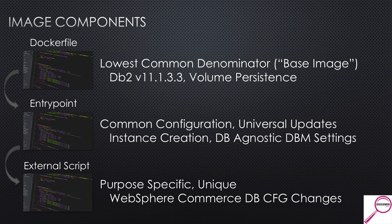That structure allowed me to mix and match pieces to build different images. If I just wanted a base install of DB2, I had my Dockerfile. If I wanted a base install with a plain database and a couple of configurations, I'd compile the Dockerfile and entry point together. The logic is: keep your Dockerfile as simple as possible, and let configuration come out after the fact.